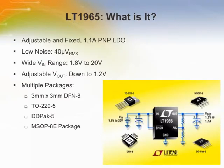The LT1965 is a 1.1 amp adjustable and fixed output voltage PNP-based LDO regulator. It offers high power density, low noise, wide input and output voltage range, good PSRR, low dropout voltage, and a bulletproof arsenal of protection features.